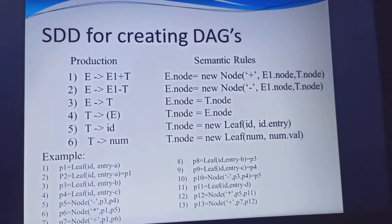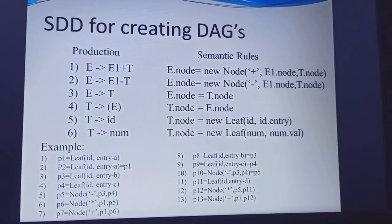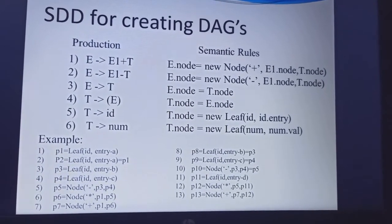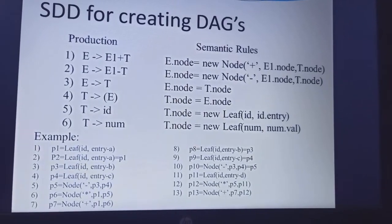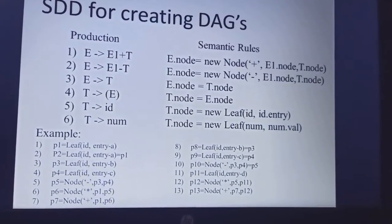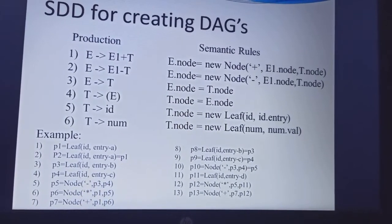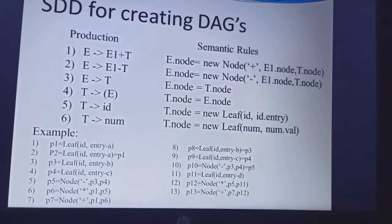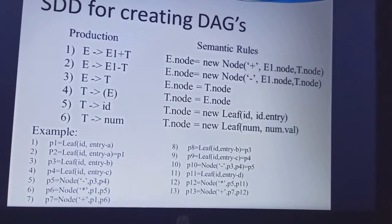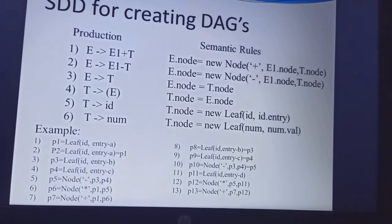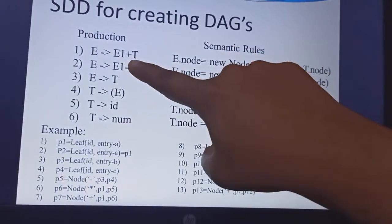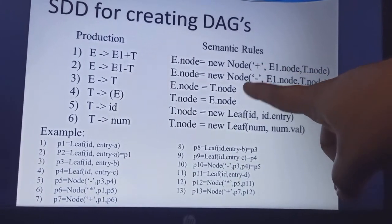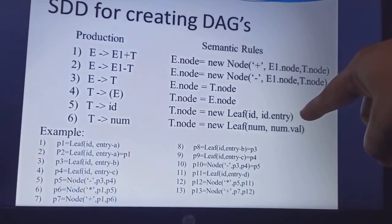The syntax-directed definition for creating a DAG has productions: E → E1 + T, E → E1 - T, E → T, T → (E), T → id, and T → num. For E → E1 + T, E.node = new node with plus as root, E1.node as left child, and T.node as right child. Similarly for E → E1 - T, a new minus node is created. For E → T, the node value is directly assigned.